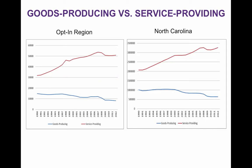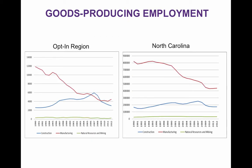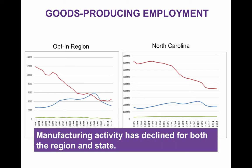Now let's break down total employment into two categories for the region: goods-producing activities and service-providing activities, and compare the regional numbers to that of the state. Two things stand out: one, economic activity has shifted away from goods-producing to service-providing activities, and this trend is larger than the region — these figures look strikingly similar. If we look at the goods-producing activities by sector, we can see that the decline is due to a decline in manufacturing. But the decline in manufacturing is a larger trend facing the state and the nation, not just the region. This means that landing and keeping those opportunities are getting more and more difficult.